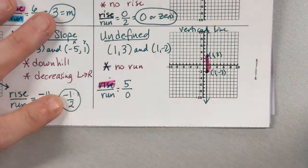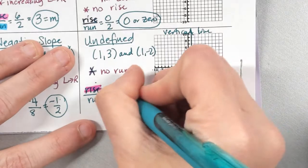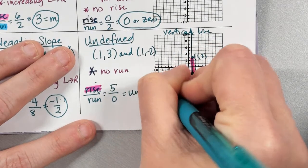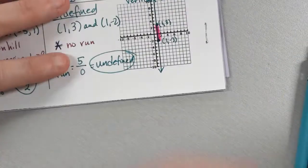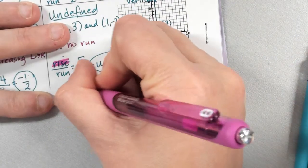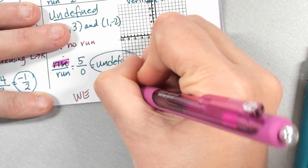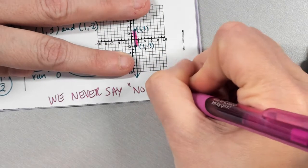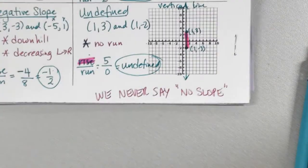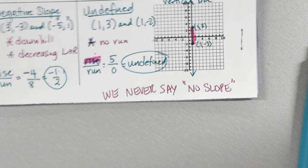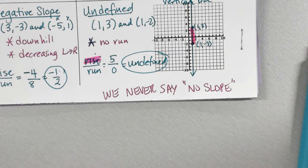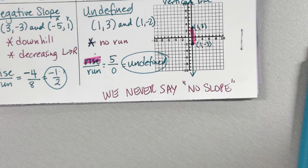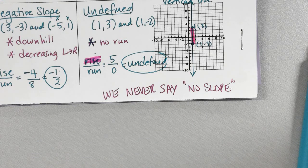Because this is an illegal operation — an operation we can't compute — we call it undefined. This operation is undefined. The last thing to write down: we never say 'no slope,' because every line has slope. It might be zero, it might be undefined, it might be a positive or negative integer, but it always has slope. We don't say 'no slope' to mean undefined or zero.